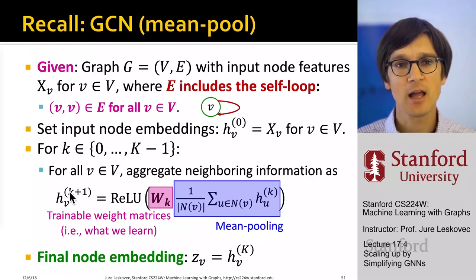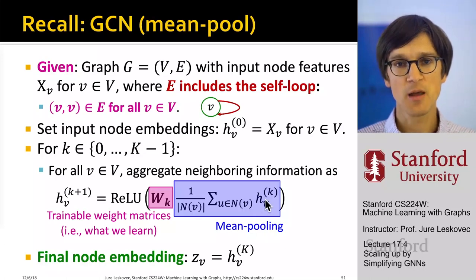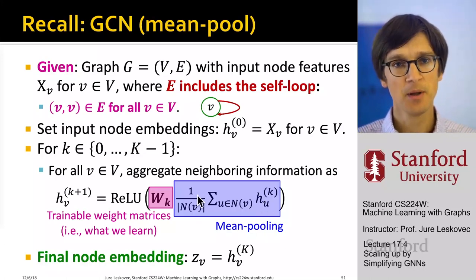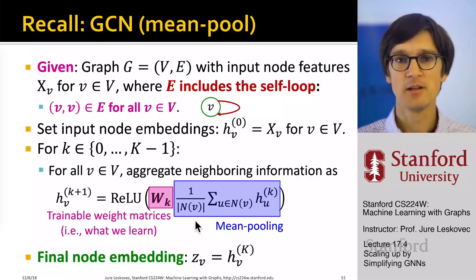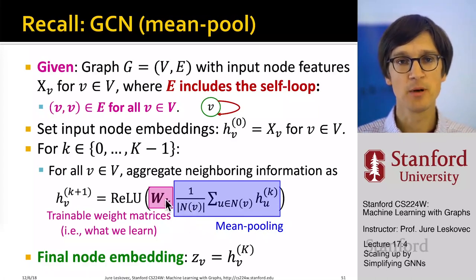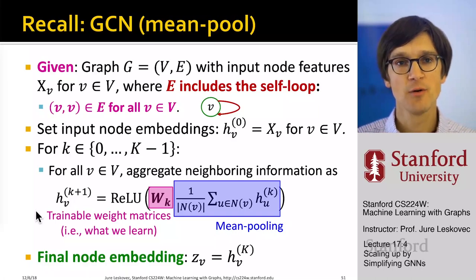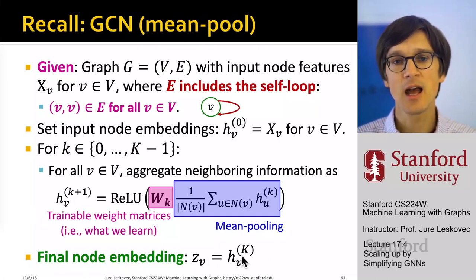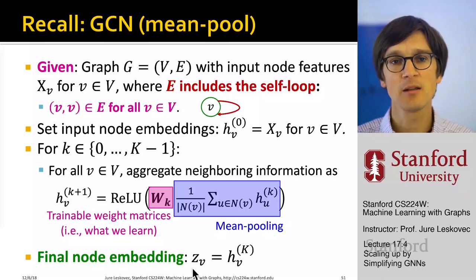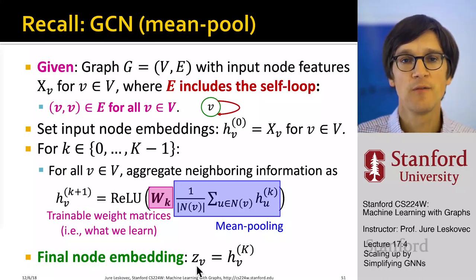Every node at layer k+1 takes the embeddings of its neighbors from the previous layer, sums them up, divides by the number of neighbors, transforms by a learned matrix, and passes through a non-linearity. We run this recursion for k iterations, and whatever embedding we end up with at the end, that is what we call the final embedding.